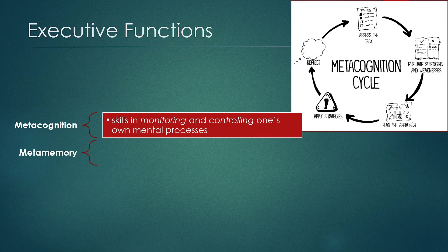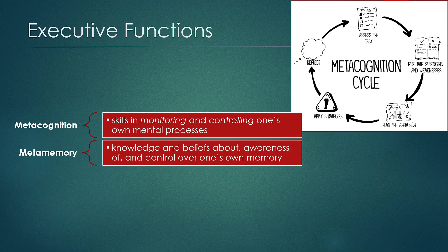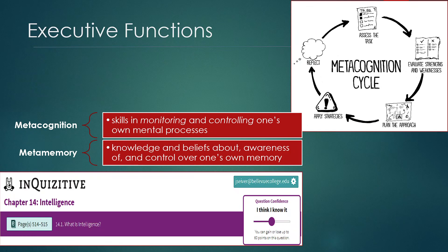Metamemory — so 'meta' actually means sort of awareness. So metacognition is our awareness of our cognitions. Metamemory means our awareness of how our memory system works. We can define it as our knowledge and beliefs about our awareness of, and our control over, our own memory. You've been taking inquisitives where one of the things present for each of these quizzes is this confidence rating that you're supposed to do.